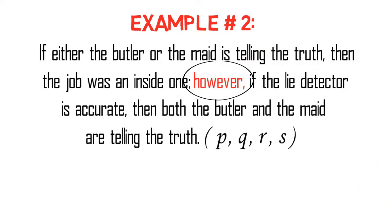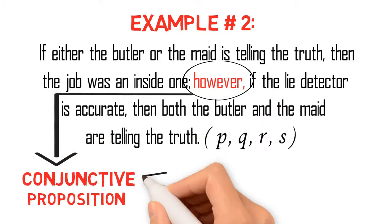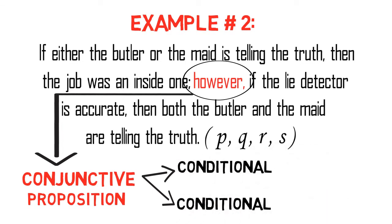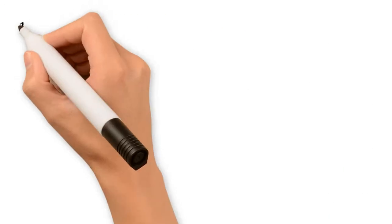Now if we analyze the proposition, it becomes clear that it is a conjunctive proposition whose conjuncts are both conditional propositions with a component inclusive disjunction and conjunction respectively.